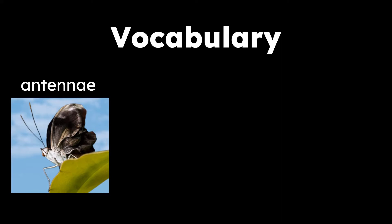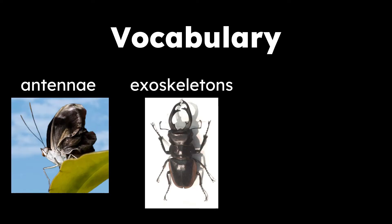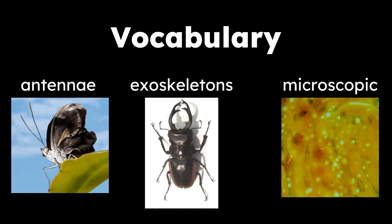Let's take a look at some vocabulary words in our read aloud today. The first word is antennae — sensory appendages or feelers on the heads of insects. The next word is exoskeletons — the stiff body coverings of insects providing support and protection; skeletons on the outside of the body. And the last word, microscopic, refers to something that is too small to be seen without the aid of a microscope. Very small.